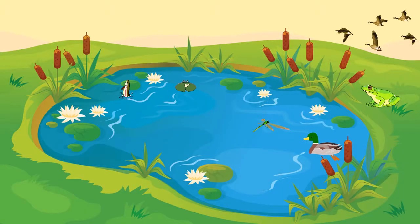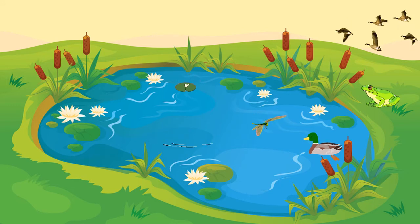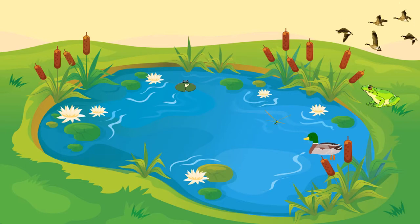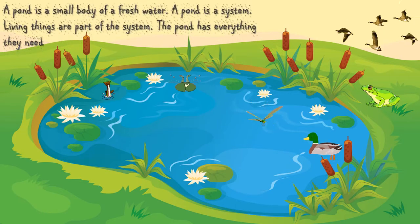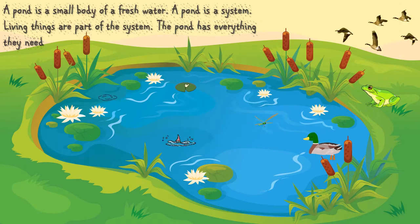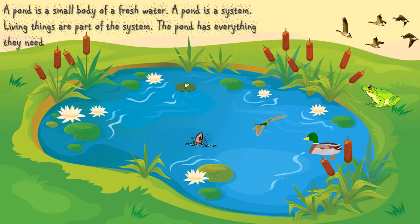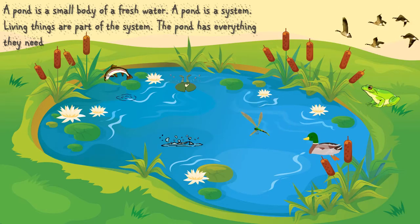Another interesting habitat which we are going to talk about now is called the pond. Have you ever seen a pond before? A pond is a small body of fresh water. A pond is a system. Living things are part of the system, and the pond has everything they need.